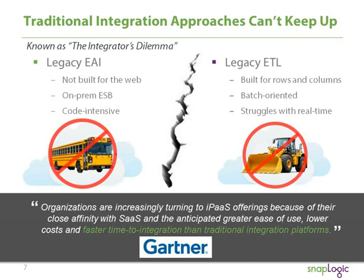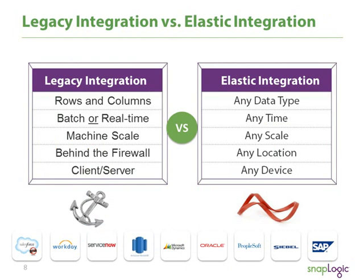What we're consistently talking to customers about is legacy versus what we're calling elastic integration needs: rows and columns mindset versus any type of structured or unstructured data that needs to be integrated; batch or real time versus any time; machine scale versus any scale; integration that once ran only behind the firewall versus integration that can run anywhere depending on where data gravity is in your company; and client-server versus any device, with mobility being a huge driver of data volumes and enterprise innovation.